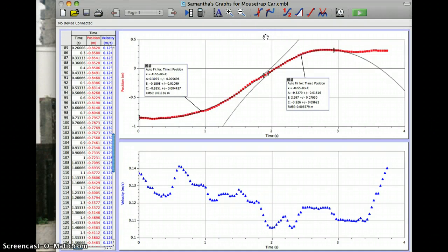But I found the overall acceleration by using the V final formula, which is V final equals V naught plus AT. My V final was 0.12 meters per second, my V naught was 0.136 meters per second, and my time was 0.333 seconds.